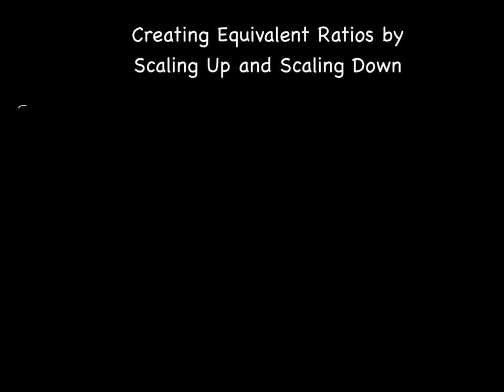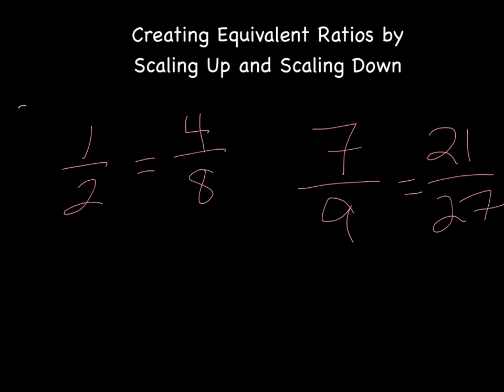We've talked about equivalent several times - with fractions and when converting fractions to decimals. Equivalent represents two things that are equal in amount. For example, one half equals four eighths. These are equivalent fractions. Or seven ninths is equivalent to twenty-one twenty-sevenths. These are equivalent because they represent the same amount of a whole.